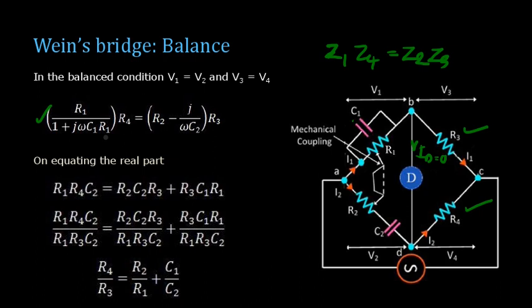What we do is we will be simplifying the equations and equating the real part. You can expand these terms and simplify it. On equating the real part, what we will get is that R4 by R3 equal to R2 by R1 plus C1 by C2.